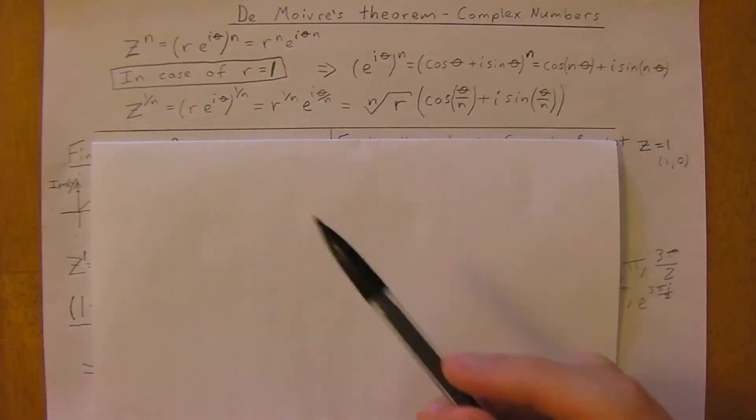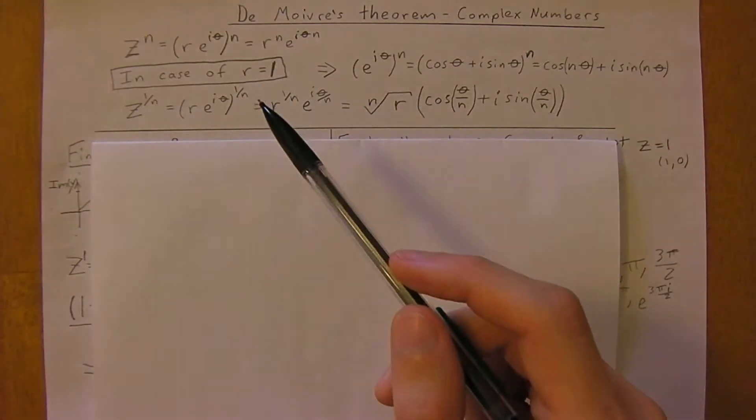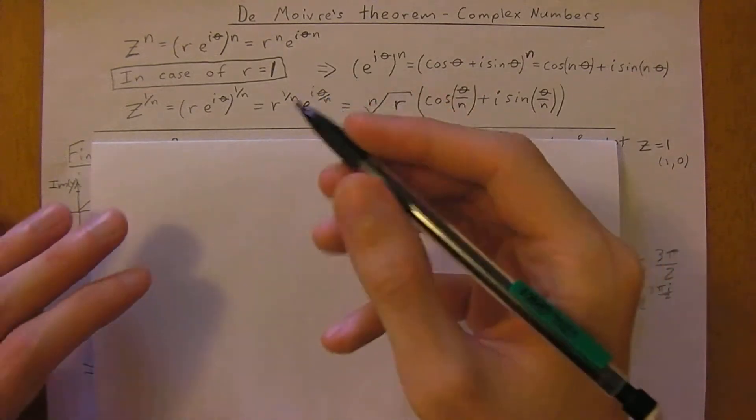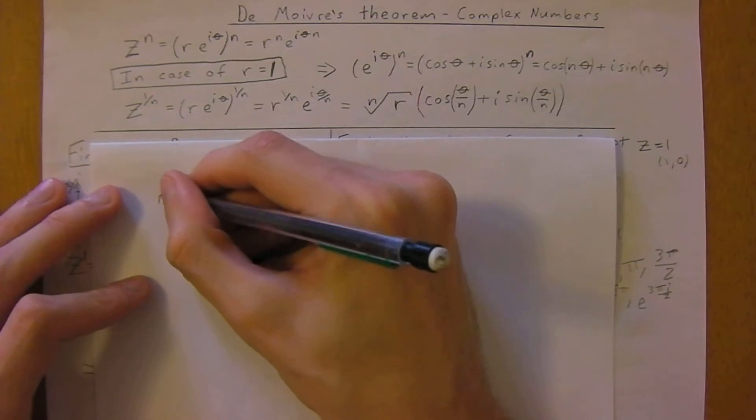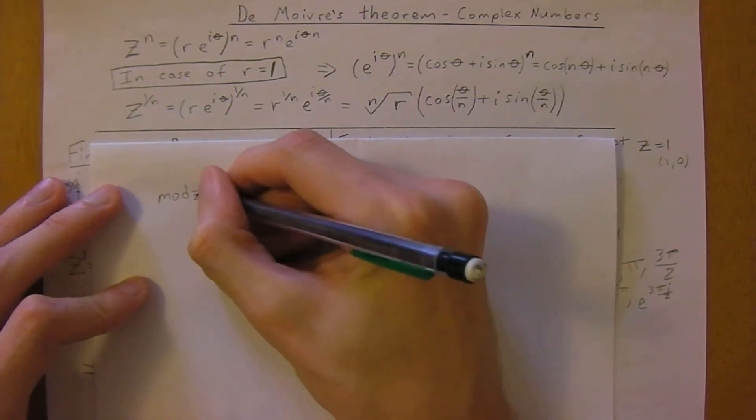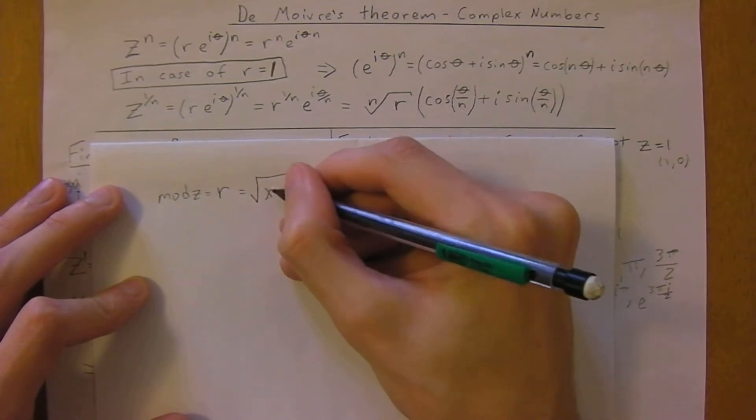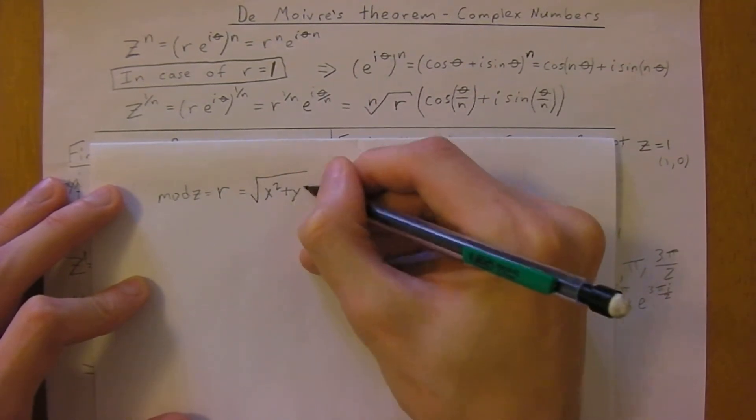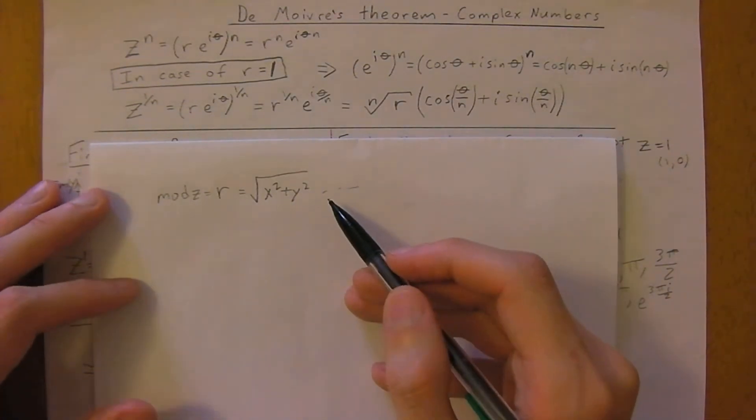To obtain the nth power of a complex number, we take the nth power of the modulus. Remember that modulus is just the radius, so mod z equals the radius, which you could think of as Pythagoras' theorem: x squared plus y squared. Whenever you see modulus, we're talking about the radius.